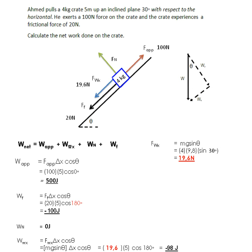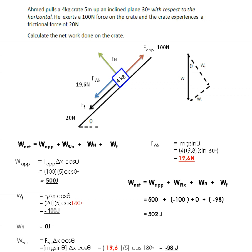Now that we have all the work applied to the box, we add them all together. W_net equals W_applied plus W_gravity plus W_normal plus W_friction, which is 500 + (−100) + 0 + (−98) joules. Adding that all up, the net work done on the box is 302 joules.